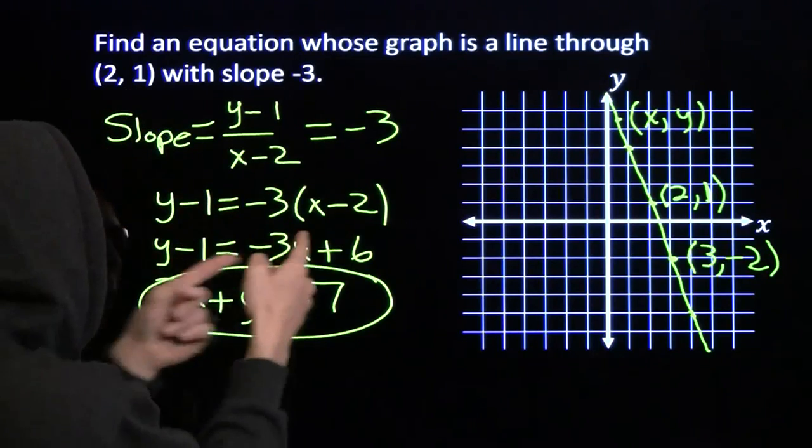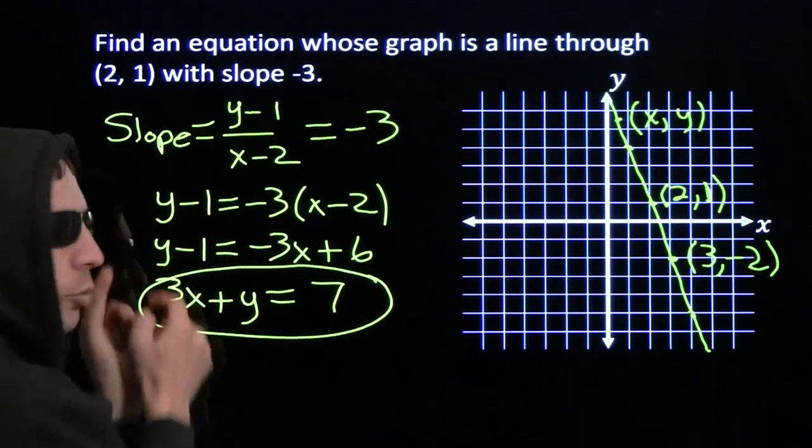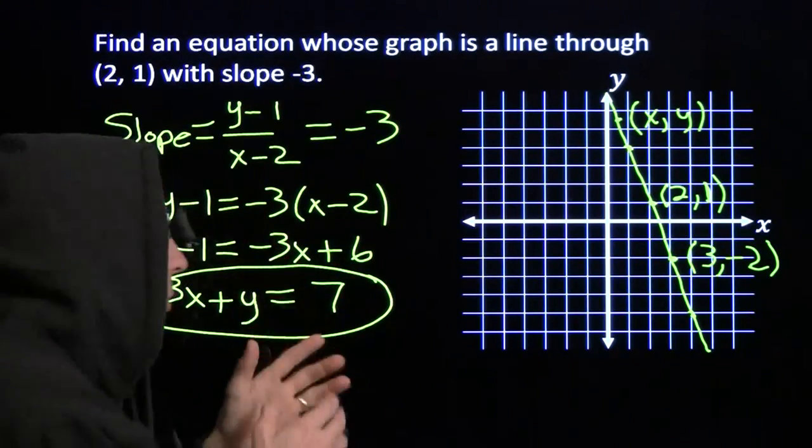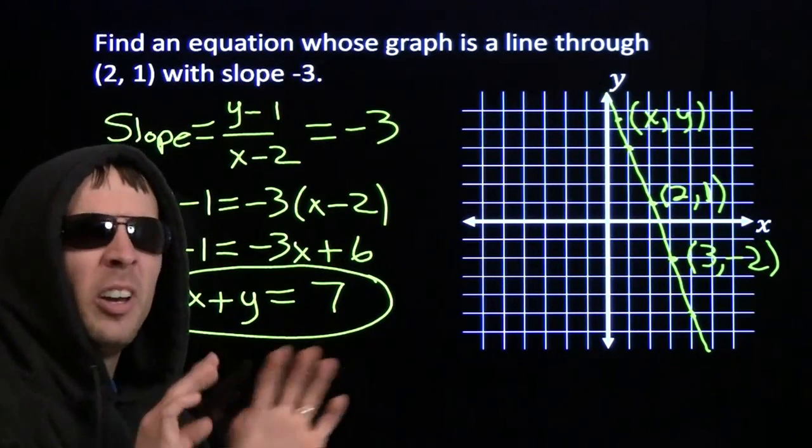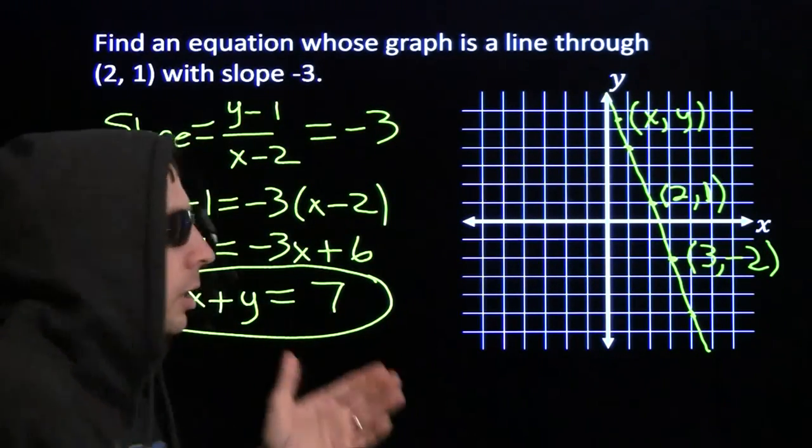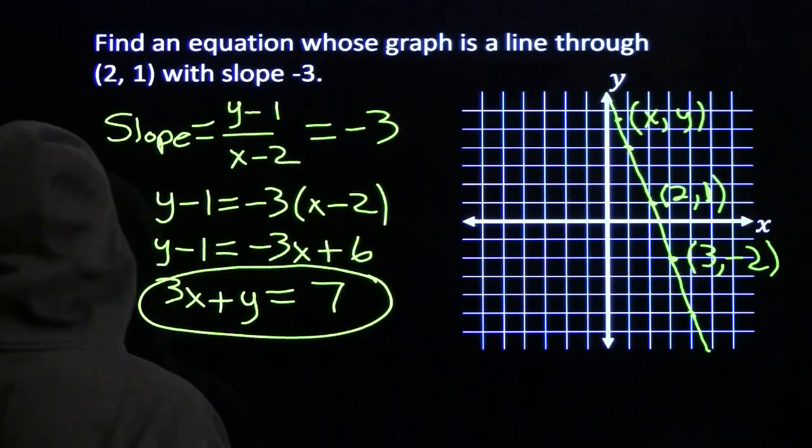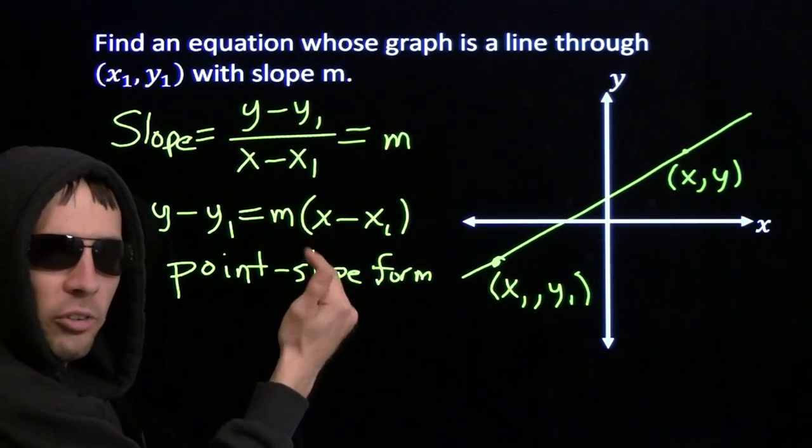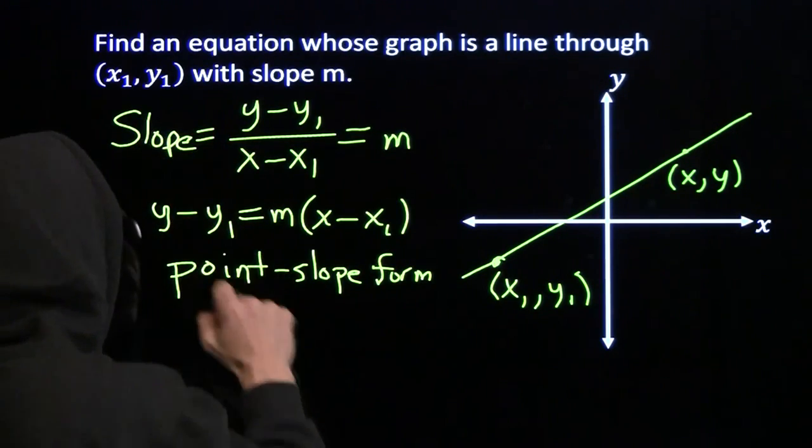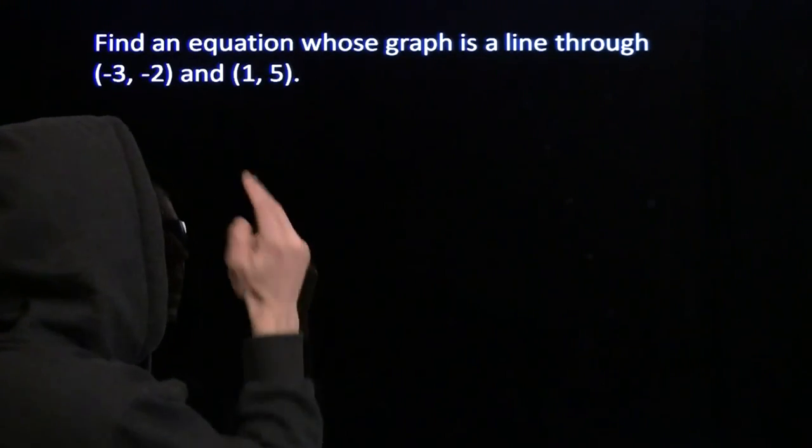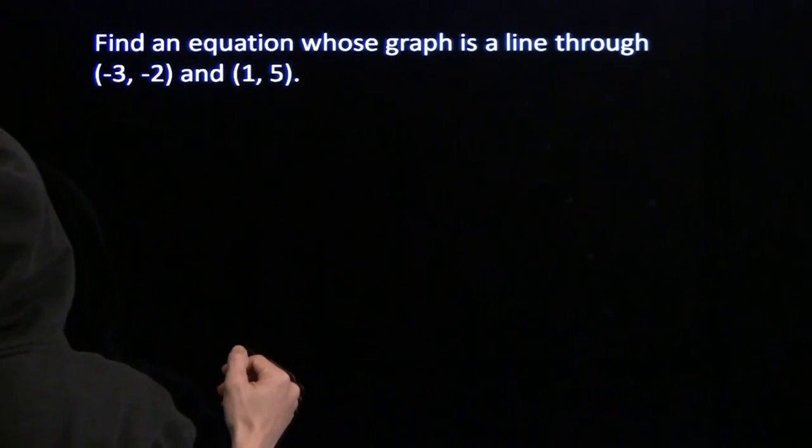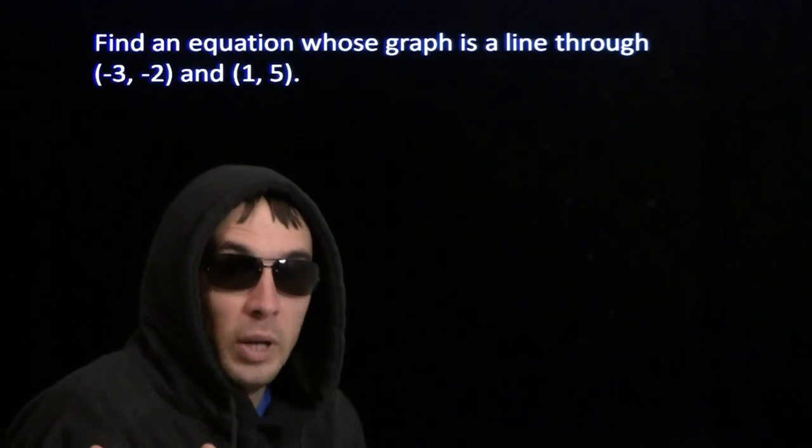And you know, if you're trying to remember, oh, do I multiply the x part by the slope? Do I multiply the y part by the slope? Forget all that. Start from the definition of slope. You'll never get it wrong. Just remember what slope means. That's all you need to remember. And you already know point-slope form. Now, of course, this isn't just useful in problems where you're given a point and a slope. What if we instead give you two points and no slope? Well, if we have two points, we have the slope.